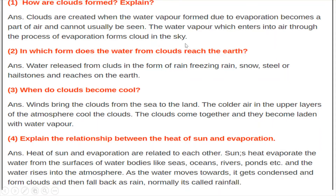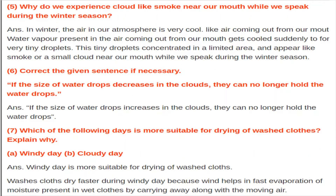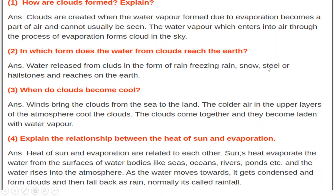In which form does water from clouds reach the earth? In the form of rain, snow, sleet — note: it should be 'sleet', not 'steel' — C-L-O-U-D-S. Water releases from clouds in the form of rain, freezing rain, snow, sleet, or hailstones — ice pieces falling — and reaches the earth's surface.